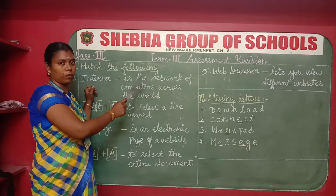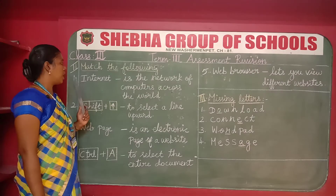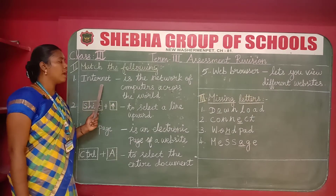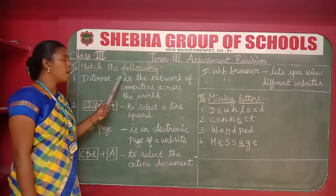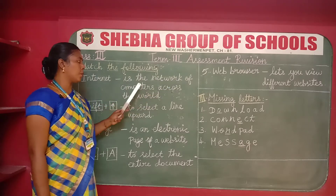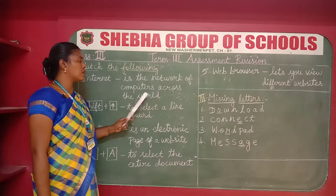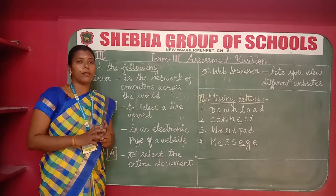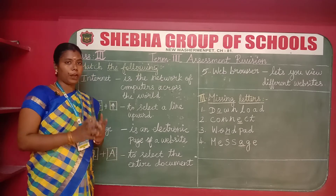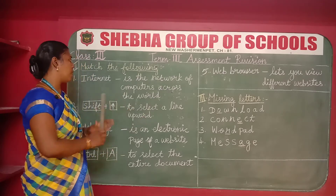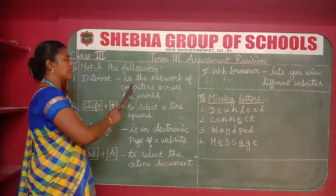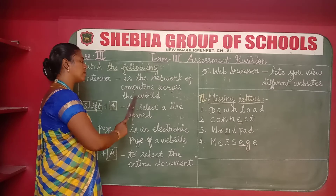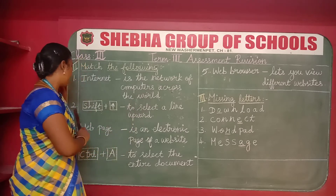Number one: internet. Internet is a network of computers across the world. Number two: Shift plus up arrow — they have to use it to select a line upward.